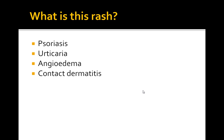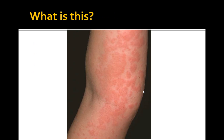The correct answer is urticaria. Urticaria are raised, flat-top, well-demarcated skin lesions with surrounding erythema. An individual lesion usually lasts minutes to hours. If an individual lesion lasts longer than 24 hours, a different diagnosis should be considered. Central clearing can cause an annular lesion and is often seen after antihistamines have been taken.